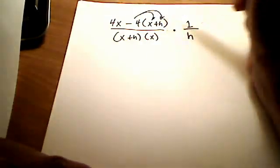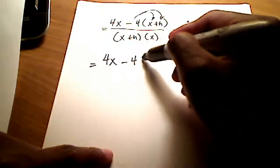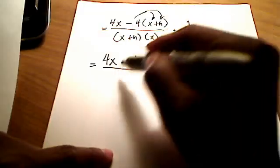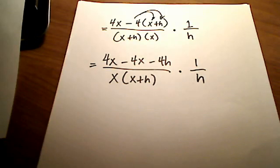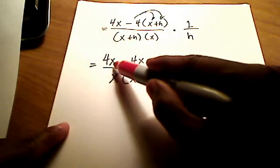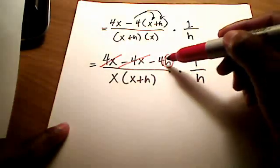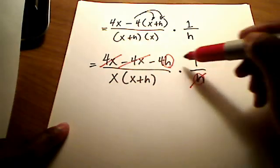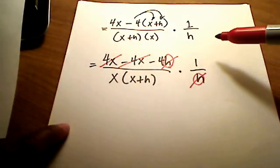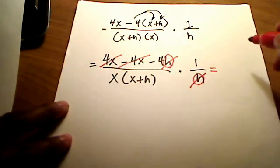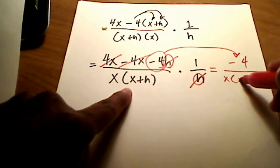And while I'm at it, I might as well distribute this out here, this negative 4. So I've got 4x minus 4x minus 4h all over x and x plus h times 1 over h. And I hope you can see pretty easily that my 4x's cross each other out. 4x minus 4x is just 0. And this h right here that's all by itself on top, that's being multiplied by negative 4, and this h down here cross each other out, since rules for simplifying fractions apply here now.